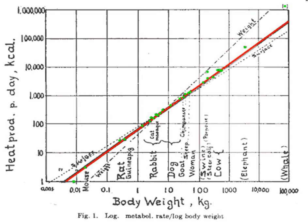Symbolically, if q0 is the animal's metabolic rate and m the animal's mass, then Kleiber's law states that q0 ~ m^(3/4). Thus, over the same timespan, a cat having a mass 100 times that of a mouse will consume only about 32 times the energy the mouse uses.